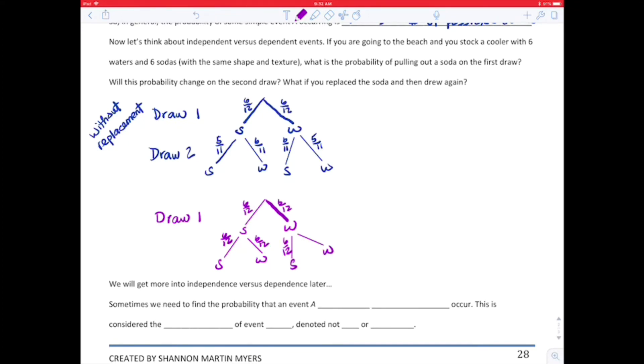So the second scenario that I did in the pink is with replacement. And so each trial or each draw would be independent. But on the first scenario, the first draw would be independent, but then that second draw represents a dependent model because it depends on what you drew the first time.